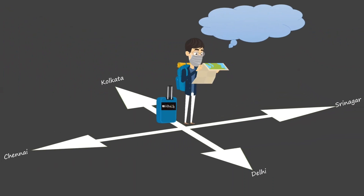Let's imagine that there is a salesman who wishes to visit various cities in order to build his customers and sell his products. He has to visit all the cities exactly once and return back to his city in such a way that he spends the minimum amount of money possible. What is the best route he should take to minimize his costs?